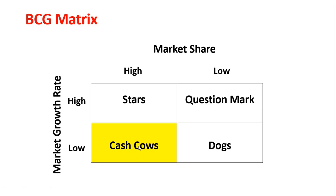Cash Cows generate funds, and Dogs, if divested, release funds. Stars and Question Marks both need additional commitment of funds. Cash Cows, on the other hand, generate profit. The cash surpluses they generate can be used anywhere in the business.